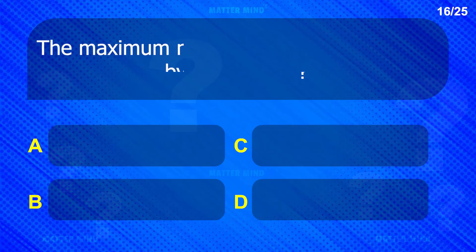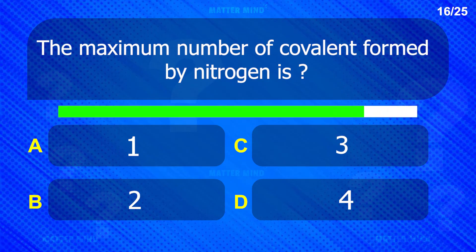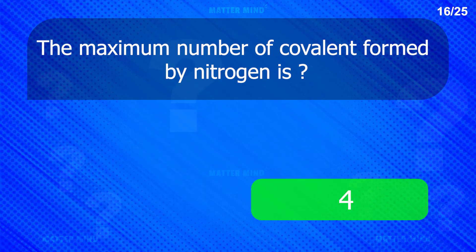The maximum number of covalent bonds formed by nitrogen is: Four.